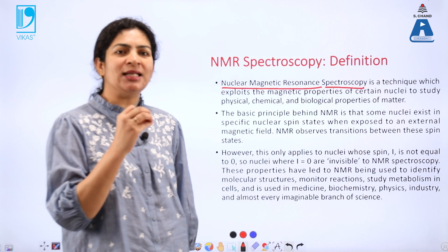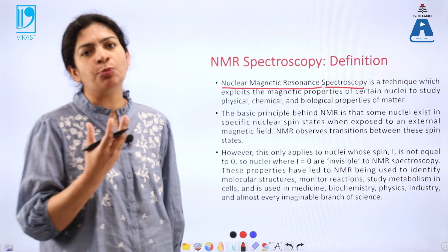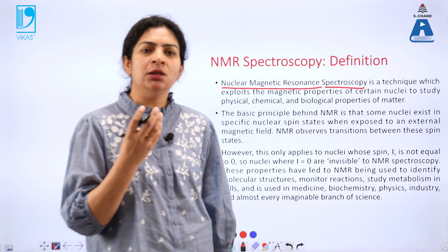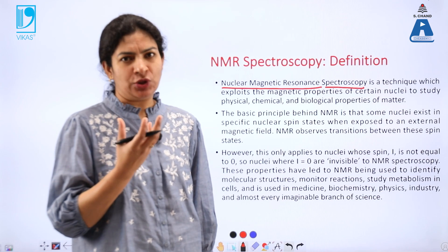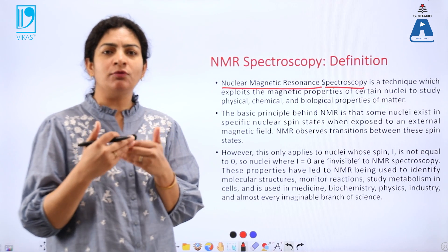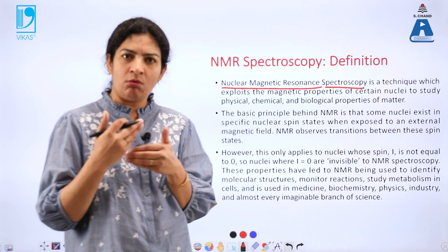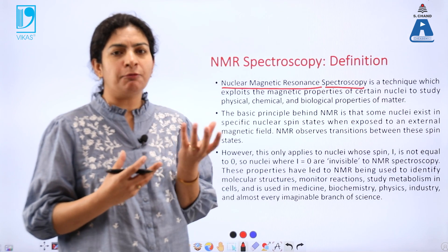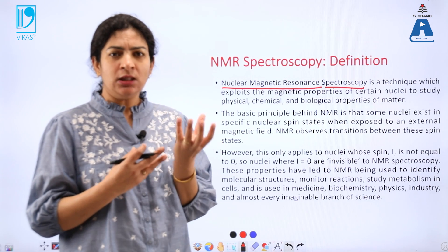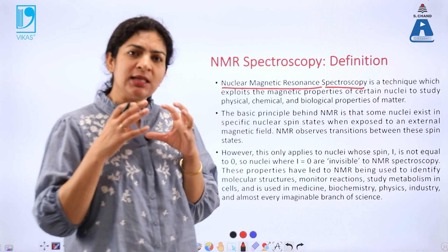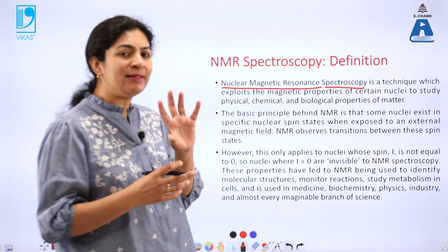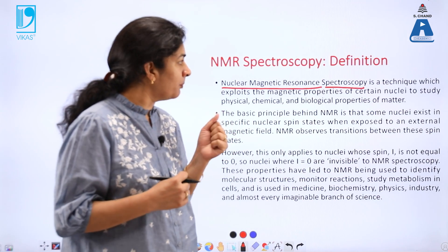NMR spectroscopy is based on the magnetic properties of certain nuclei. We all know that a nucleus is a charged species. When these charged species are under rotation — when the nuclei rotate about their own axis — they generate a magnetic field. Therefore, this nucleus acts as a tiny bar magnet. It is this magnetic property of the nucleus that NMR spectroscopy is entirely based upon.